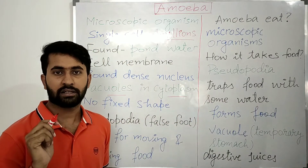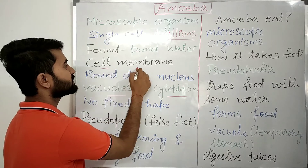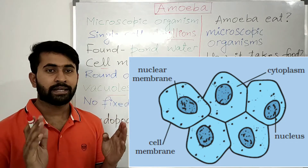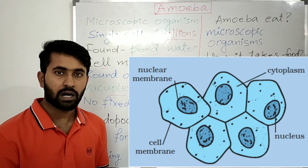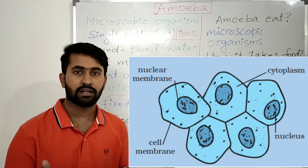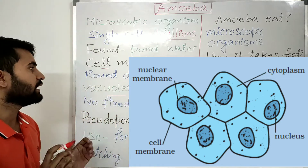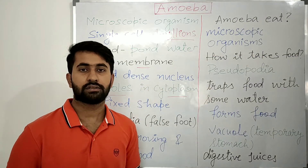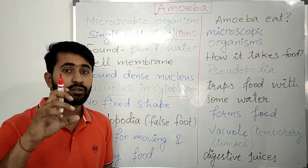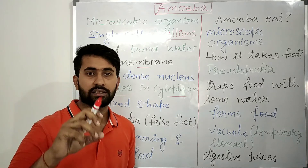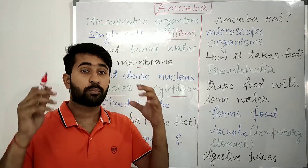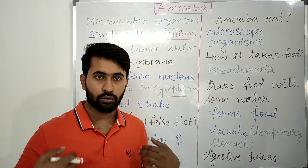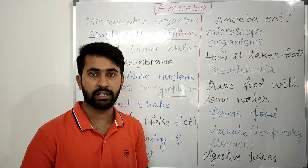You might be thinking: what is this cell membrane? Cell membrane means the outer boundary or the outer layer of the cell. And the nucleus — it is the control center of the cell, just like the brain is the control center of our body and controls the functions of our body.